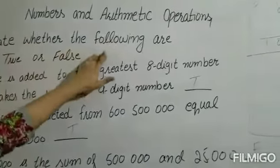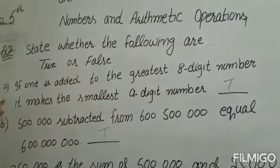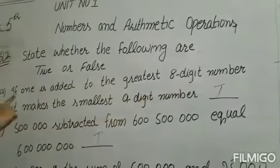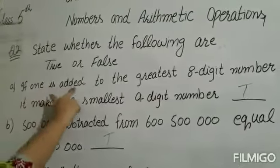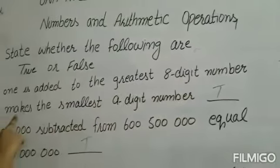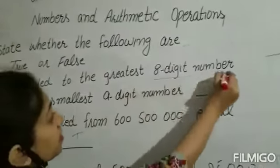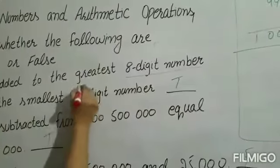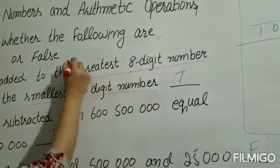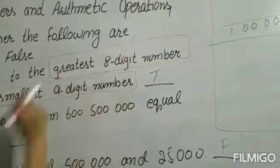Question number 2: State whether the following are true or false. आपको यह statements दी जाएंगी, इनमें से कौन सी statement true है और कौन सी false है, वो आपने अपनी blank में put करना है। Statement 1 है: if one is added to the greatest eight-digit number, it makes the smallest nine-digit number. यहां पे दो चीज़ों का use हुआ है: greatest eight-digit number और smallest nine-digit number। हमने इन्हें briefly discuss किया था।